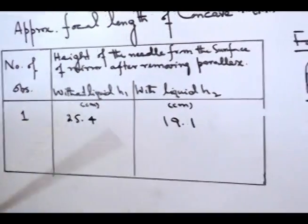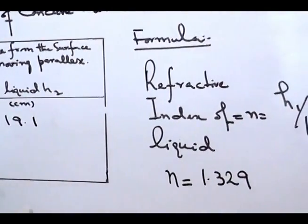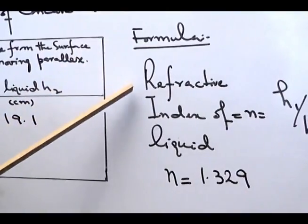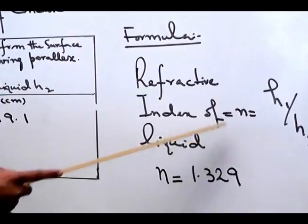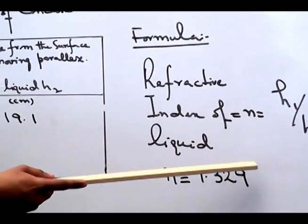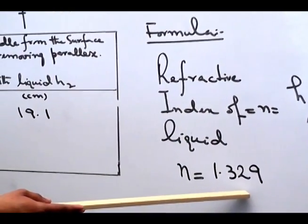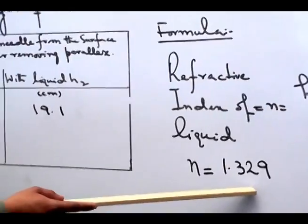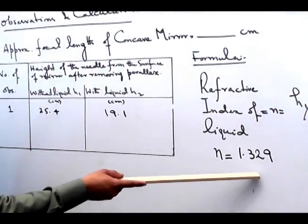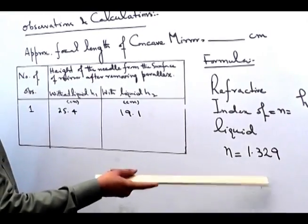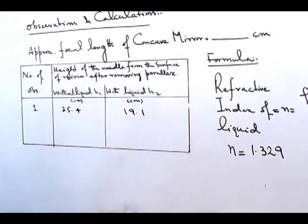Take two to three observations and calculate the mean values of h1 and h2. Then apply the formula: refractive index of liquid = h1 / h2. Our calculated answer is 1.329, and the approximate standard value of the refractive index of water from the table is 1.33.